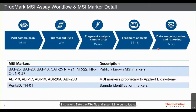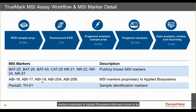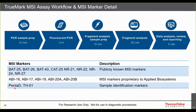The kit includes 13 MSI markers: eight are publicly known MSI markers including some Bethesda markers, and five are proprietary Applied Biosystems markers shown to be quasi-monomorphic — having the same allele across multiple ethnic populations — which is critical for tumor-only mode. These five were also shown to be extremely sensitive across multiple cancer types. Two sample identification markers, PentaD and TH01, detect sample mix-ups or contamination.